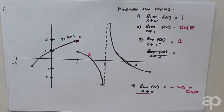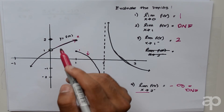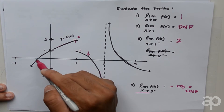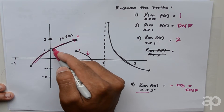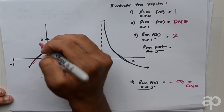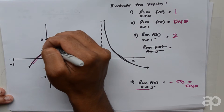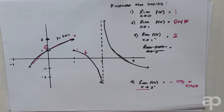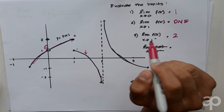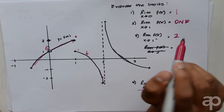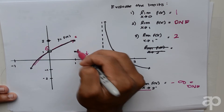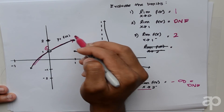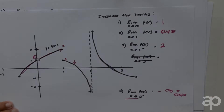It is important to remember that the limit at a certain point only exists if the right limit and the left limit equal each other. At x equals 0, both the left and right limits equal 1. But with the second problem, the right limit equals 1 and the left limit equals 2, so they don't match and the limit does not exist.